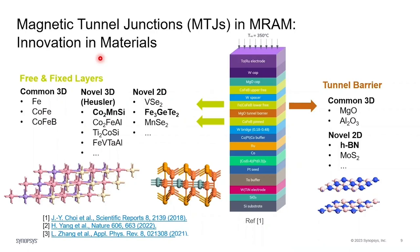The advancement of MRAM relies on innovation in materials. As you can see here, MRAM stacks, including magnetic tunnel junctions, are comprised of many layers of different materials. The main MTJ layers are free and fixed layers and a tunnel barrier. Here you can see some of the common and novel 3D and 2D materials considered for MTJ. Atomistic modeling plays an important role in efficiently investigating and testing the performance of different materials for MTJs without the need of producing these stacks and performing measurements.